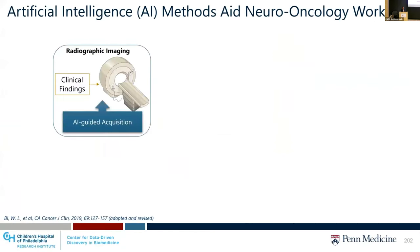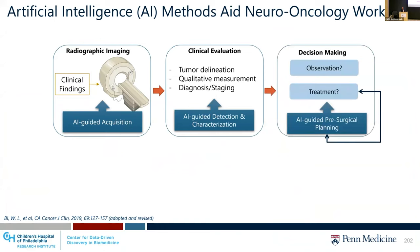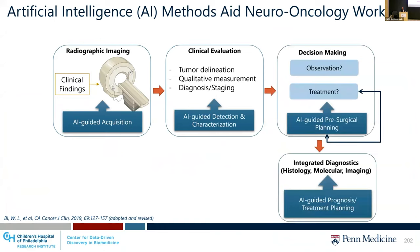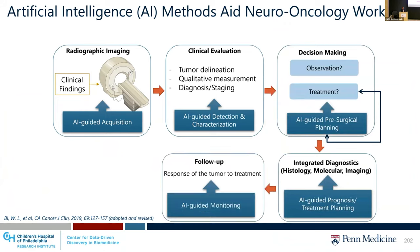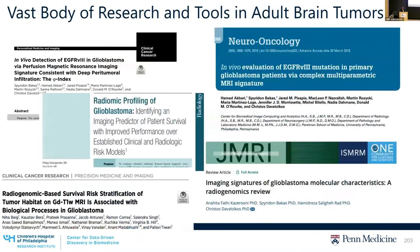AI can help in the neuro-oncology workflow at all steps — in acquisition, detection, characterization, pre-surgical planning, and integration of different diagnostic methods for prognosis and treatment planning, and finally in monitoring patient response to treatments. In a clinical trial, when an endpoint or outcome has been reached, the AI can be optimized throughout the process.